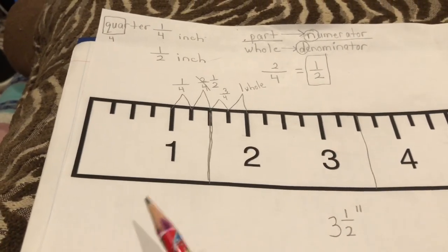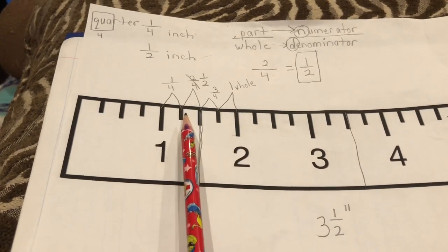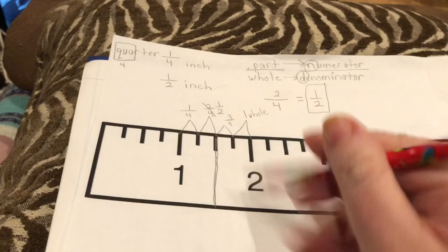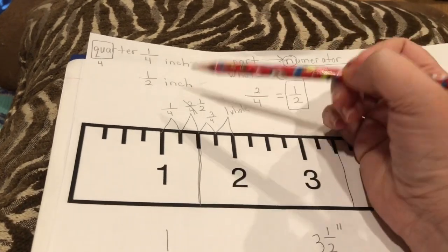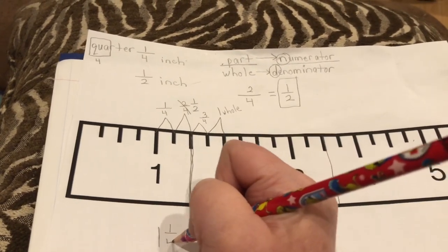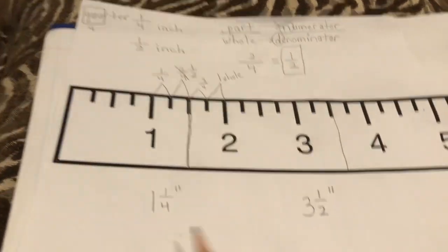So if our line segment reached right here, we would have one whole inch. And this hash mark would be a quarter of another inch. So we would write it like this.